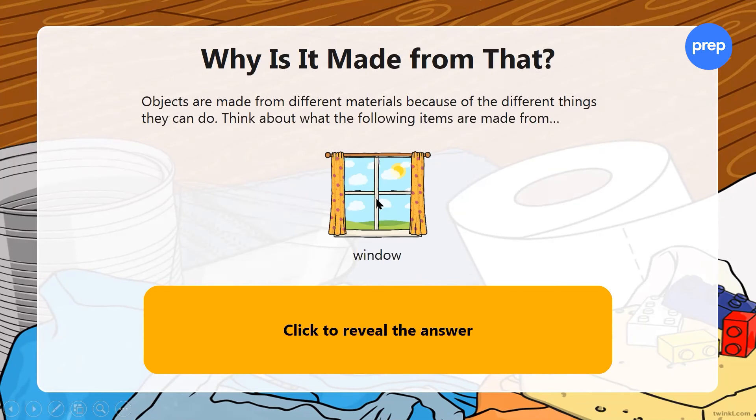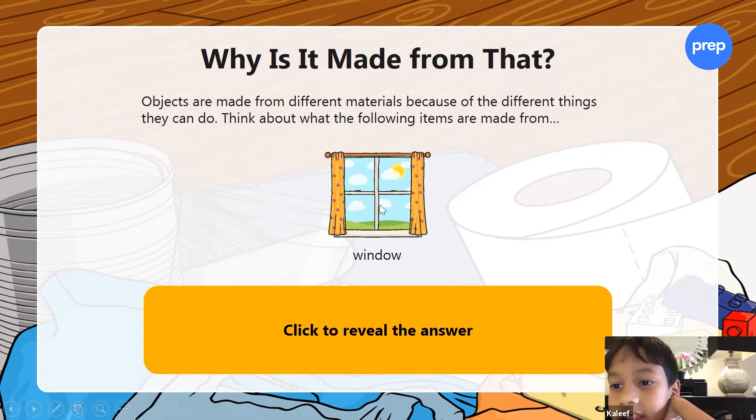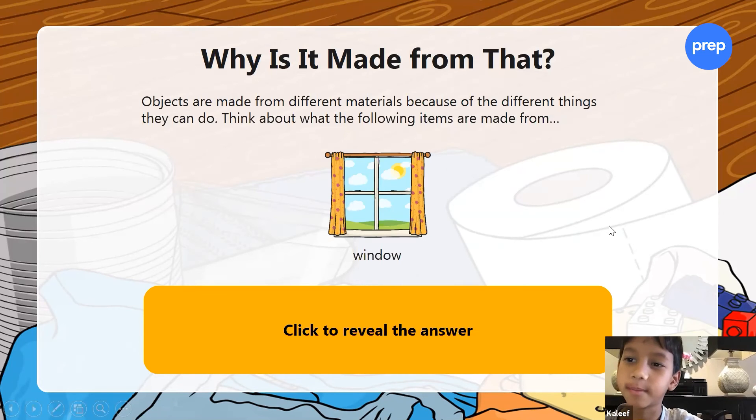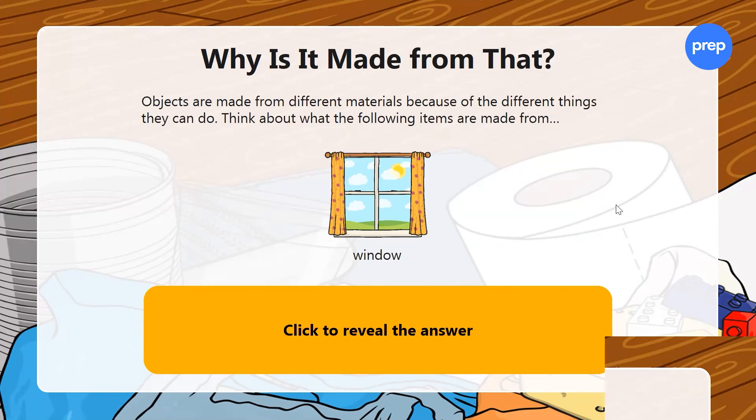window, right? So what is the window made out of? Glass. Glass. Okay, Khalif, tell me one property of glass that makes it good for a window. It's waterproof. It's waterproof, so the rain can't come in. Very good. Jared, what's the other property of glass that makes it good? Transparent. Very good.